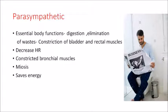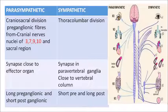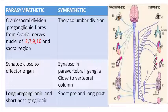The parasympathetic system is known as the craniosacral division. In the vertebral column we have cranial, thoracic, lumbar, sacral, and coccygeal divisions. The nerves arise from the cranial and sacral regions — the topmost and bottommost portions. The preganglionic fibers arise from cranial nerve nuclei 3, 7, 9, 10, and from the sacral region. These are involved in the parasympathetic system.